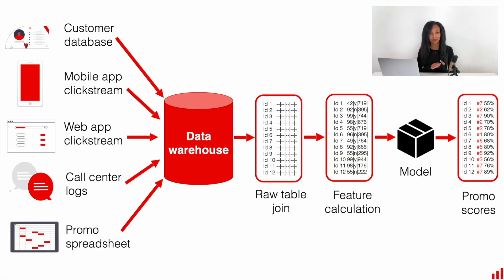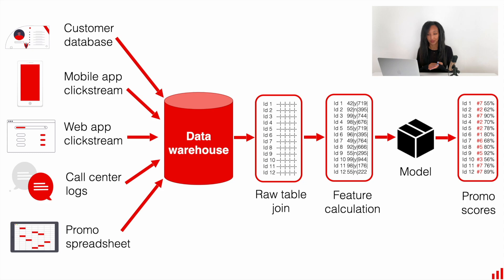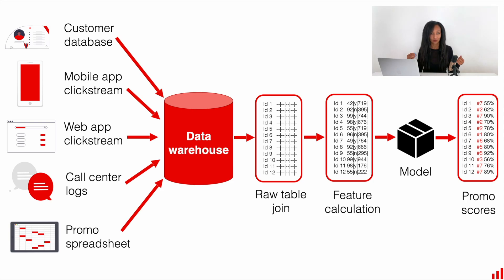If you have pretty complex systems which use data from different sources in order to generate some outputs, if this service is very complex, then there are quite a lot of things which can go wrong with your data. For example, if you need to use your machine learning model to generate some propensity scores for your marketing campaign, you might want to use data from many different sources to take into account different signals.